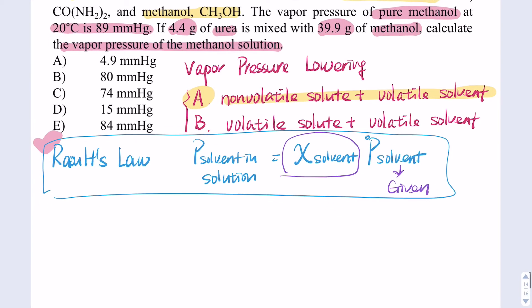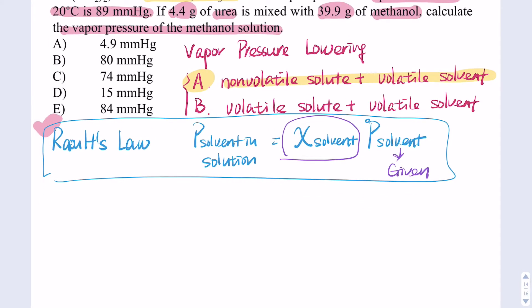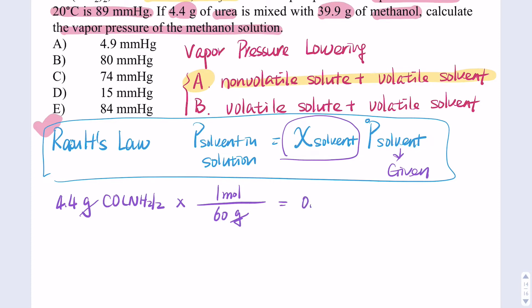So we have 4.4 grams of the solute, which is C₂H₄O₂ — wait, CO and H₂₂. You need to calculate the molar mass from the periodic table. After calculating, the molar mass is about 60 grams per mole, so we get approximately 0.073 moles of the solute.